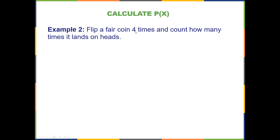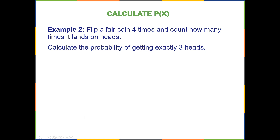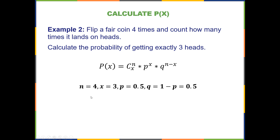Here's another example: flip a fair coin four times and count how many times it lands on heads. Calculate the probability of getting exactly three heads. Using the formula, n = 4, x = 3, p = 0.5, and q = 1 − p = 0.5 — equally likely outcomes. We calculate P(x = 3) as C(4,3) × (0.5)³ × (0.5)¹. That simplifies down and we end up with 0.25.